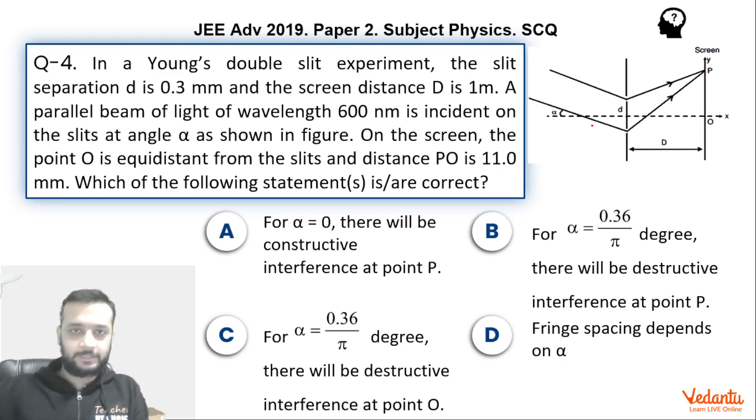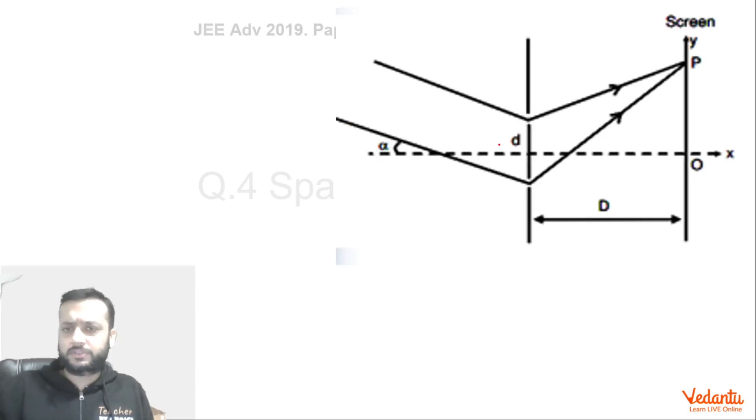Coming back to this question, light is coming at an angle alpha. So we will have different values of alpha in a YDSE setup and a point P is chosen at a distance of 11 millimeters from the center of the screen. There are two slits which have a separation of 0.3 mm and the distance between the slit plane and the screen is 1 meter. Wavelength of the light has been given as 600 nanometers. So based upon different values of alpha, we have to comment whether there will be destructive or constructive interference.